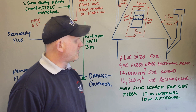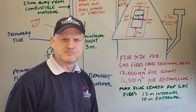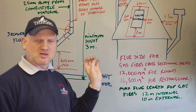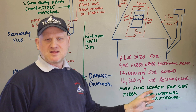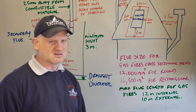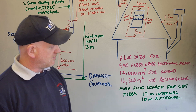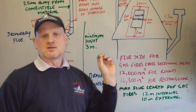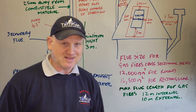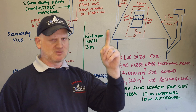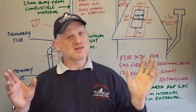For open flue fires, the cross-sectional area for a round flue is 12,000 square millimeters, and for a rectangular flue it's 16,500 square millimeters. The maximum flue length for a fire internally is 12 meters, and externally is 10 meters. Remember, if it goes outside and is longer than three meters, it still needs to be insulated.